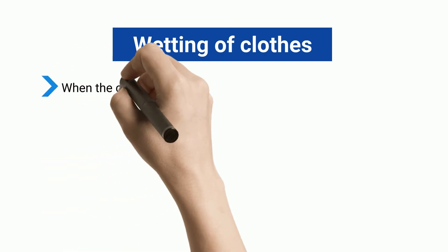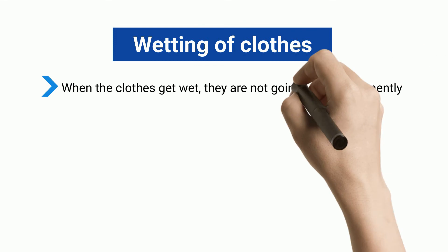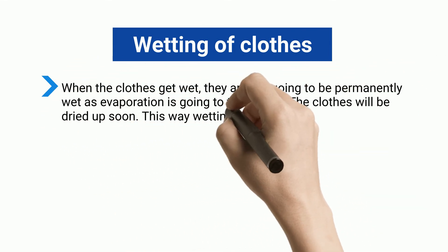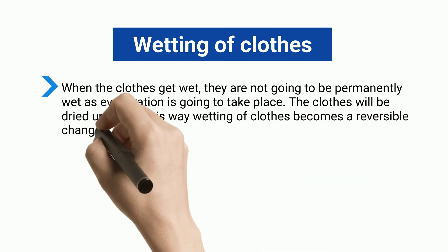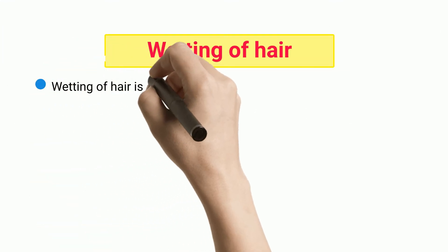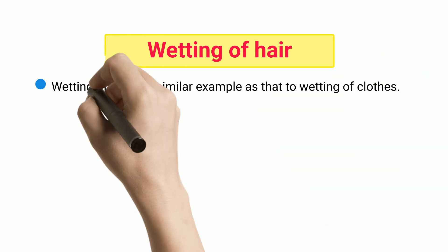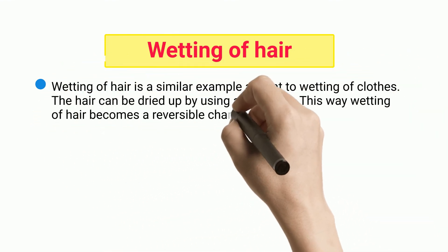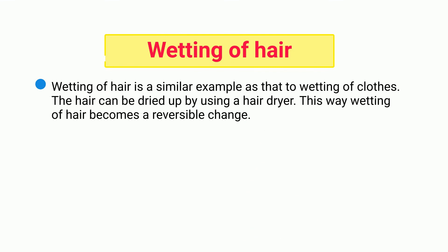Wetting of Clothes: when the clothes get wet, they are not going to be permanently wet as evaporation is going to take place. The clothes will be dried up soon. This way, wetting of clothes becomes a reversible change. Wetting of Hair: wetting of hair is a similar example to wetting of clothes. The hair can be dried up by using a hair dryer. This way, wetting of hair becomes a reversible change.